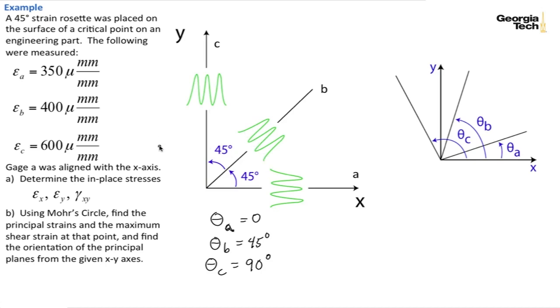Similarly, if you had a 60-degree rosette, a strain rosette, you'd have 0 degrees, 60 degrees, and 120 degrees.